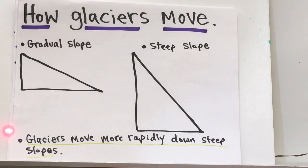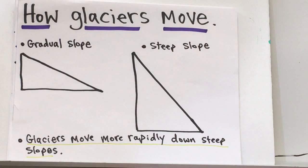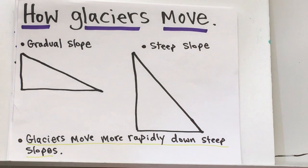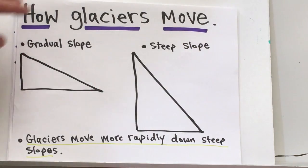Glaciers move more rapidly down steep slopes. So the steeper the slope, the more glacial movement, the faster the glacial movement. The more gradual the slope, typically the slower.